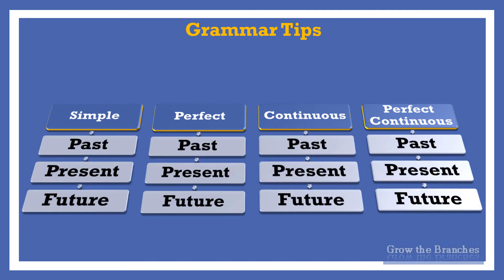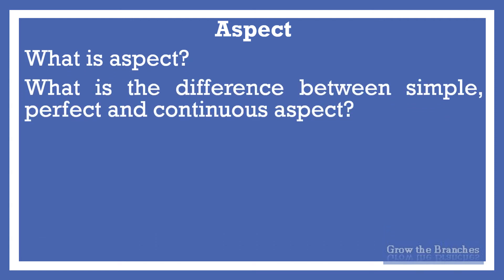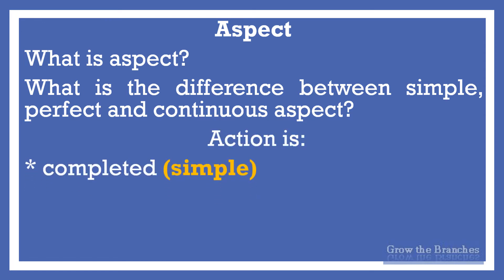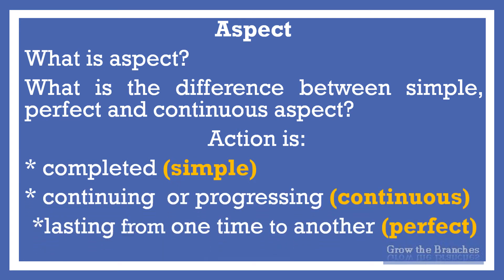Tenses in English have two parts: time and aspect. You cannot think only about time and forget the aspect, neither can you think only of aspect and forget time. Think first of the aspect, then of the time, and you will have it right. What is aspect? Aspect tells us whether verbal action is completed, continuing, or lasting from one point in time to another.